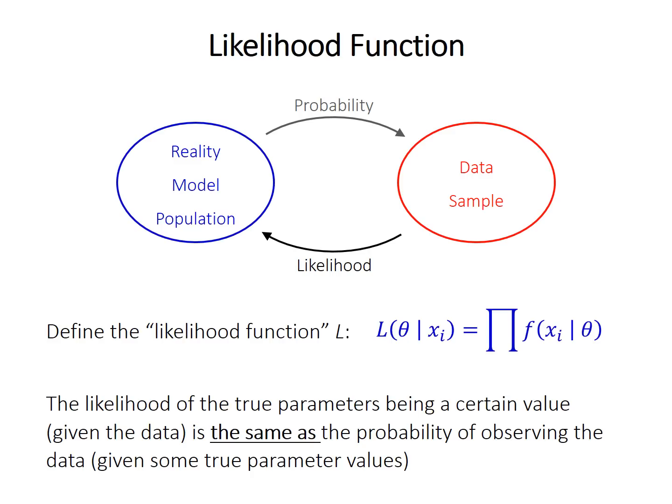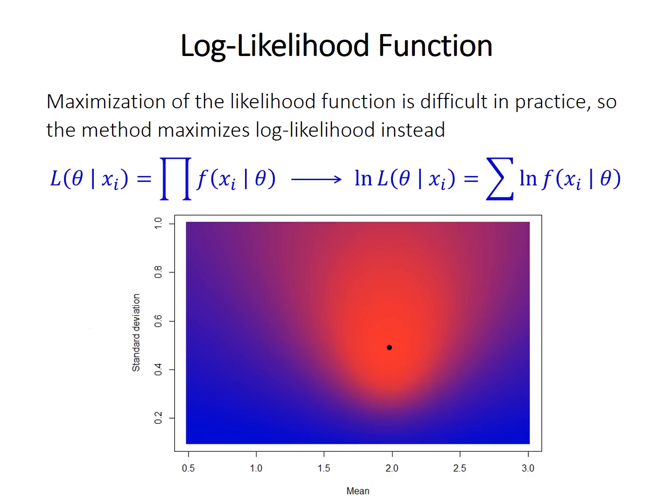But remember that likelihood is just the reverse of probability, so to get our likelihood function, we can define it this way. So this equation here states that the likelihood of the true parameters being some values theta, given the observed data x, is the same thing, or is equal to, the probability of observing the data x given some true parameter values.